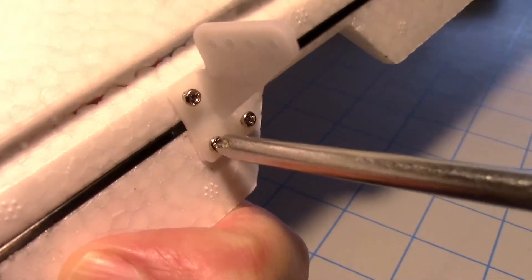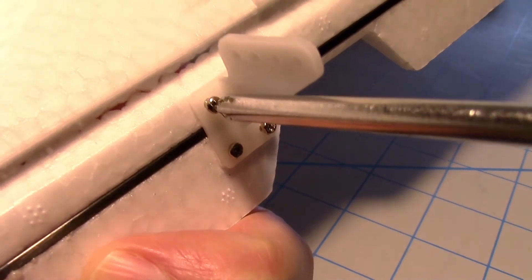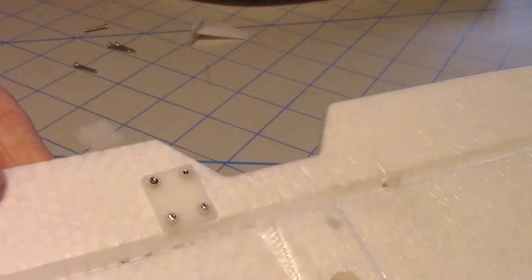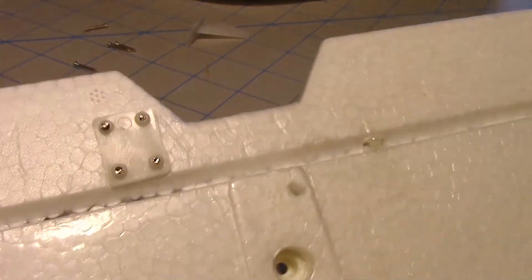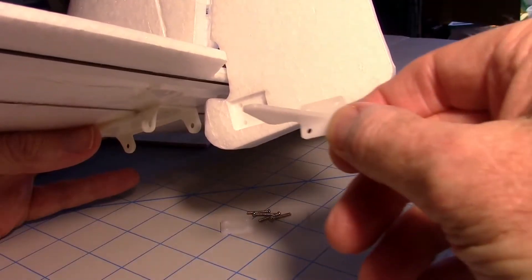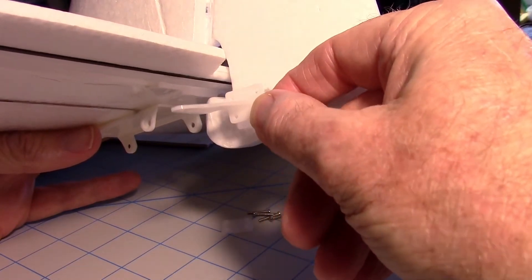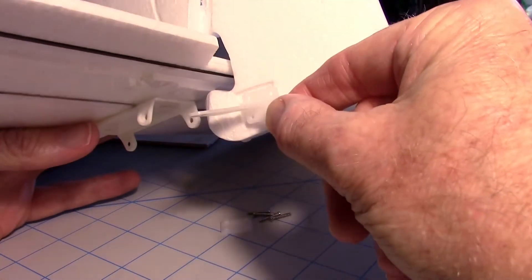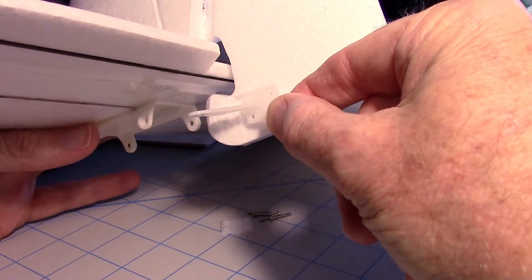Now for the rudder, the control horn goes on the left side facing forward like this. I'm going to go ahead and bolt that one on. That's how the elevator looks, you can see the two control horns right here.